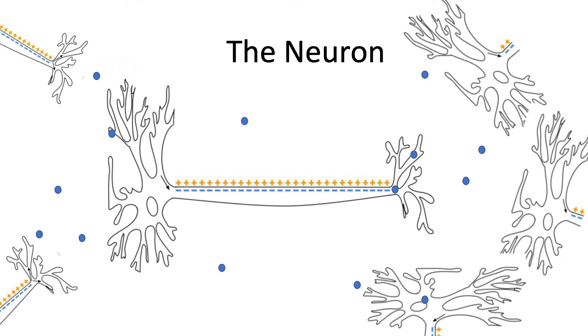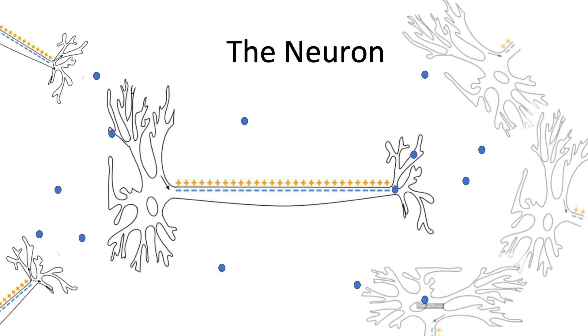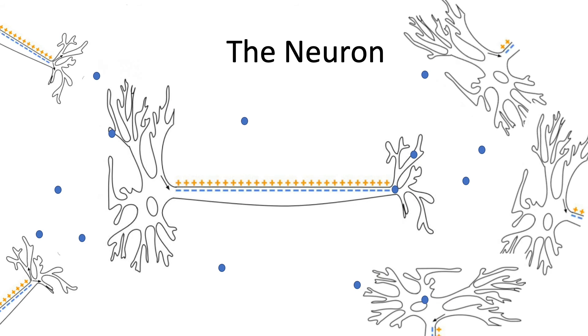So far, our neuron has received neurotransmitters and fired, moving an electrochemical wave of ions down its length. How does it pass information to the next cell? That's where the synapse comes in.